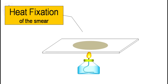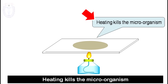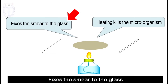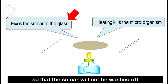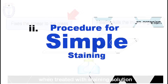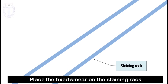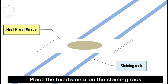Two things happen by heat fixation: first, the heating kills the microorganism, and secondly, heating fixes the smear to the glass so that the smear will not be washed off when treated with staining solution. The procedure for simple staining begins after the preparation of the smear — place the fixed smear on the staining rack.